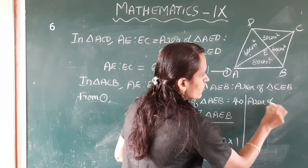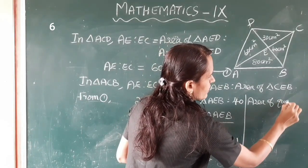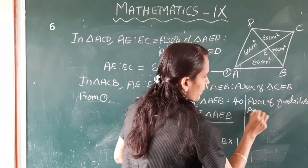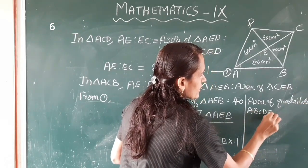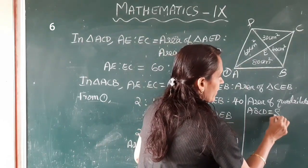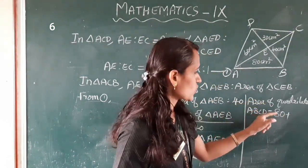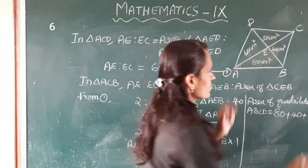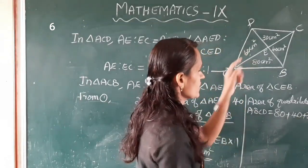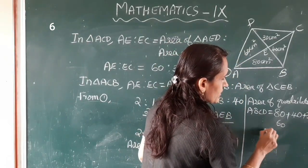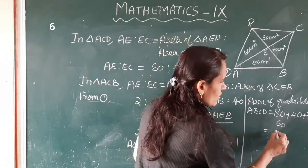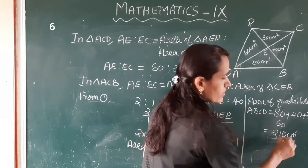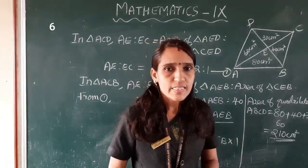Area of quadrilateral ABCD equals 80 cm² plus 40 cm² plus 30 cm² plus 60 cm², which equals 210 cm².